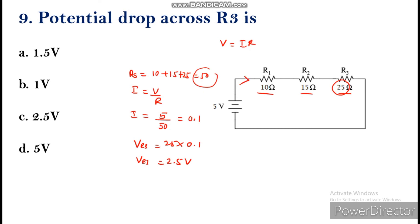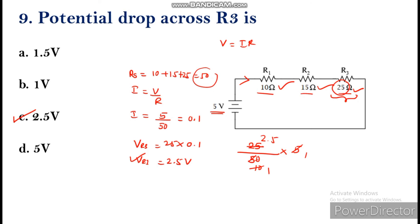In a series connection, the current through R1, R2, and R3 remains the same. We can also solve this using the voltage divider method: V_R3 = (R3 / R_total) × V_total = (25 / 50) × 5 = 2.5 volts. The answer is 2.5 volts.